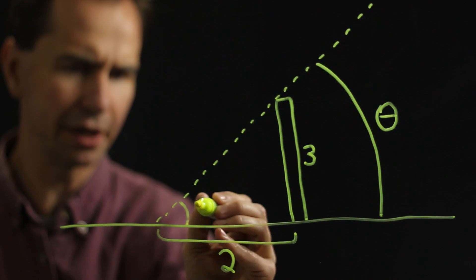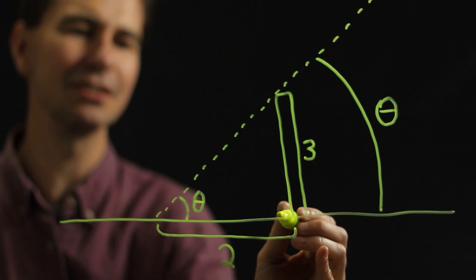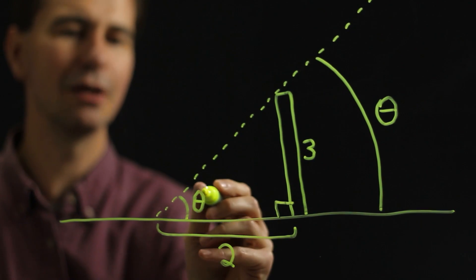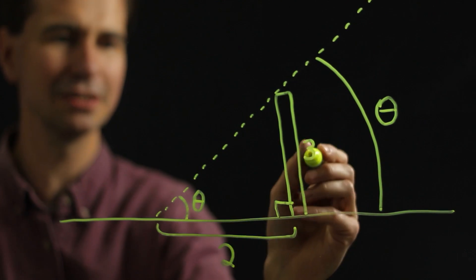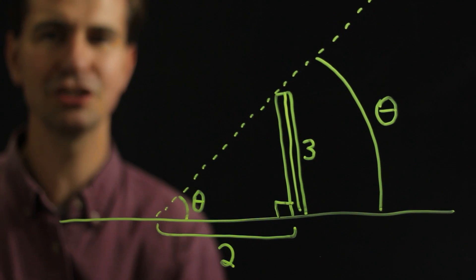We could also draw that angle right here if we wanted to. It's the same angle. And you notice that this is a right triangle here and we can actually figure out what that angle is based on how tall this fence post is and how long its shadow is.